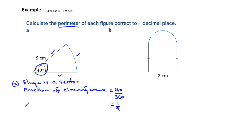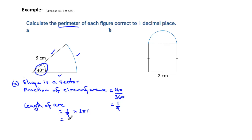So the length of the arc is going to be equal to 1 ninth of 2πr. Substituting in, we get 1 ninth of 2 times π times the radius of 5 centimeters, which gives us an arc length of approximately 3.5 centimeters, rounded to one decimal place.